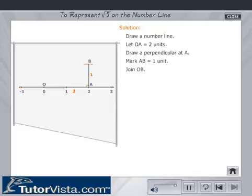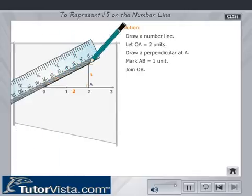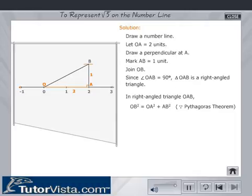Join OB. Since angle OAB equals 90 degrees, triangle OAB is a right-angled triangle. In right-angled triangle OAB, OB squared equals OA squared plus AB squared by Pythagoras theorem.